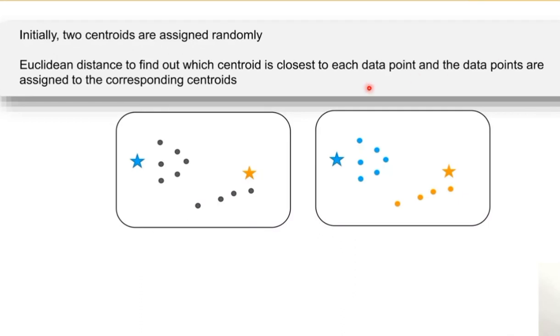Now we have to identify two centroids in a random manner. Then with the help of the Euclidean distance. Euclidean distance is defined to find out which centroid is closer to all the data points. And the data points are assigned to the corresponding centroids.